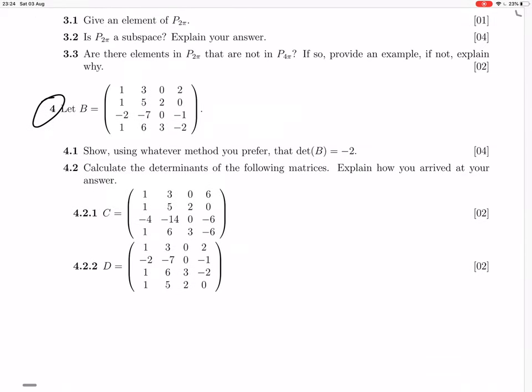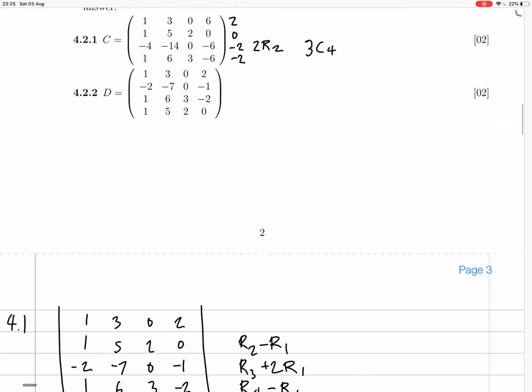Okay. Now 4.2 says calculate the determinants of the following matrices. Explain how you arrived at your answer. So these things must be related in some way to B. So the C looks like maybe we've times row 2 by 2. Okay, but then the column, that counts for most of it, I think, but the fourth column is more different than that. It's got a, instead of having what we'd expect then, which would be 2, 0, minus 2, minus 2, it's now, oh, it's everything times by 3, so times column 3 by 3, times column 4 by 3, and that means you can times the determinant by 2 and 3. Okay, so let's put that down.